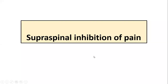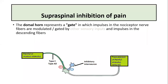In this video we will talk about the supra-spinal inhibition of pain sensation. The dorsal horn represents a gate in which impulses in the nociceptor nerve fibers are modulated or gated by other sensory inputs and impulses in the descending fibers. Please watch my video on gate control theory of pain. In this video we will talk about how the pain pathway can be modulated by impulses in the descending fibers, which is called the supra-spinal inhibition of pain.